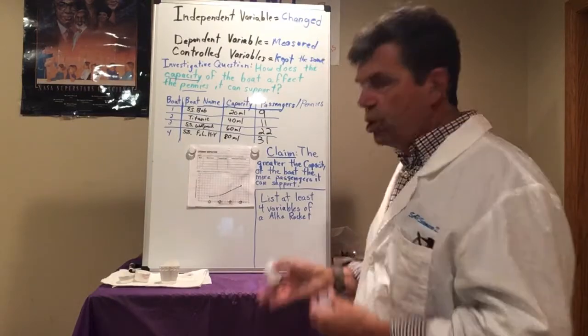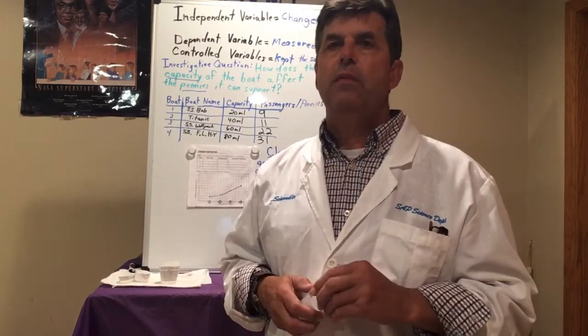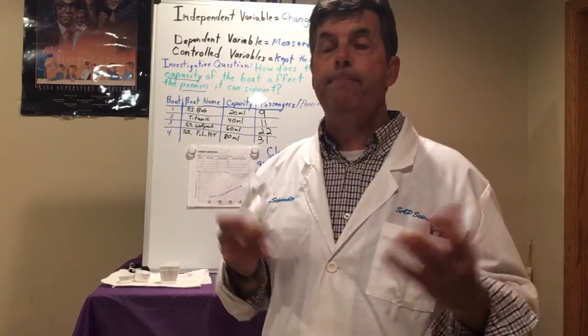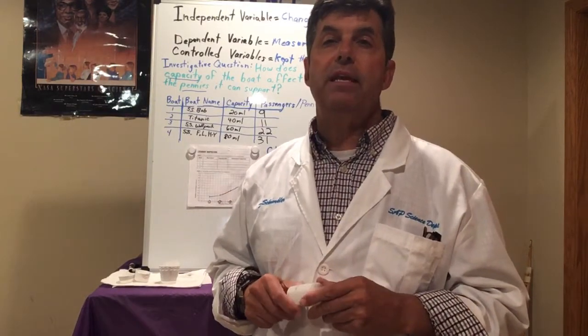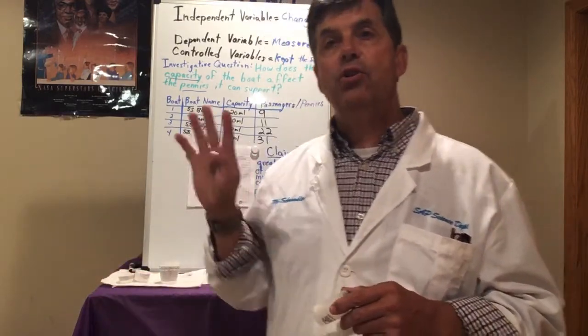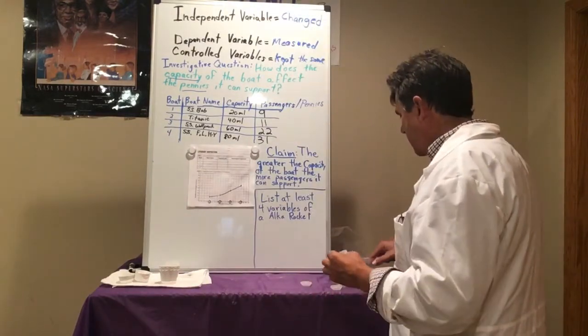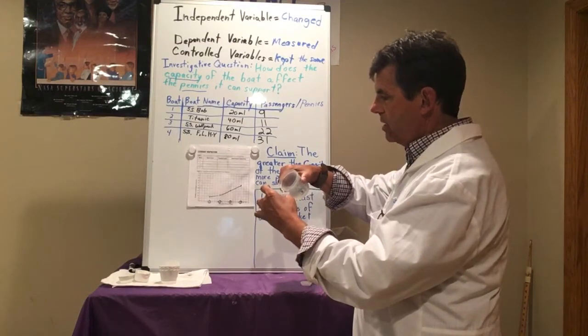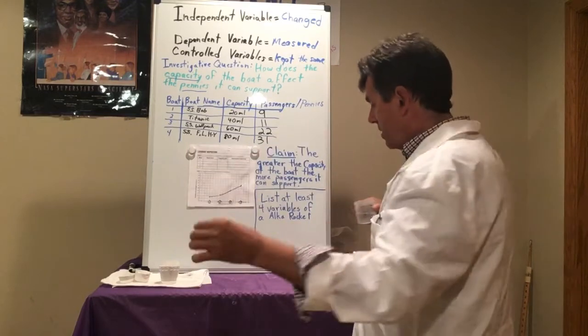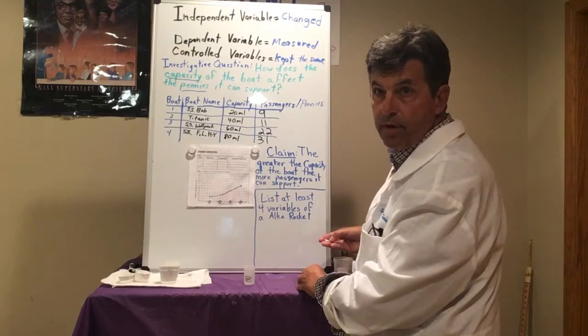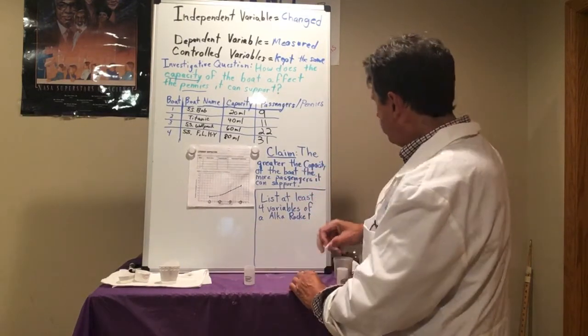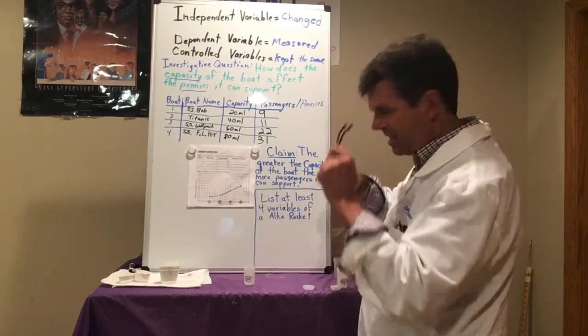I'm going to show you how the rocket works, and I want you to think of what I could change that would affect the launch. We're going to come up with independent variables — four of them — that would affect the launch. The science behind it is I'm building up air pressure. So I'm going to put room temperature H2O in this container, drop the tablet in, cap it, and put my safety goggles on because this lid flies pretty fast.